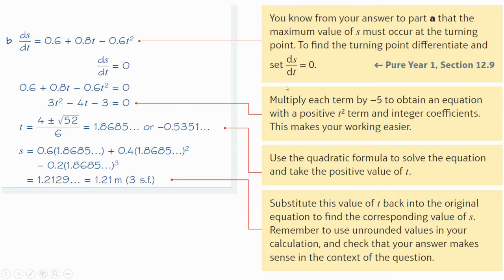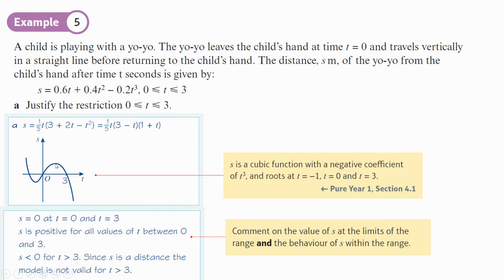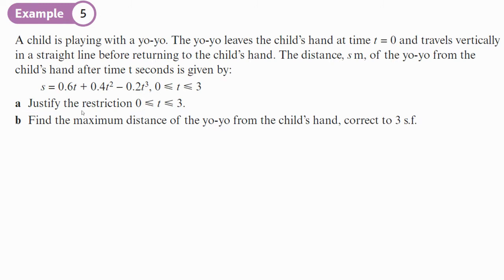Let's look at what the next part of the question says. So, the next part of the question is asking us to find the maximum distance of the yo-yo from the child's hand to three significant figures. So, if we look at the graph, maximum distance is up here at the maximum. What do we know about maximums? If you differentiate, the gradient there is 0. So, our plan is differentiate this, equate it to 0, and that will give you the maximum velocity. So, if you find out, sorry, that will give you the maximum, that will tell you the time where the maximum velocity is reached. And then if you put that back in the original equation, you'll get the distance traveled.